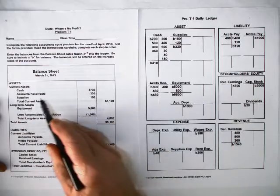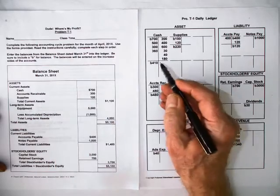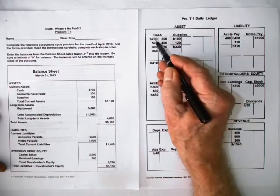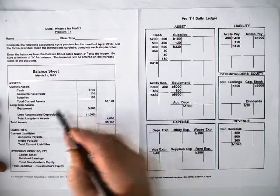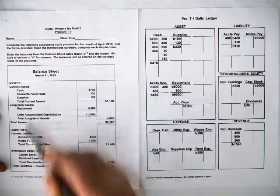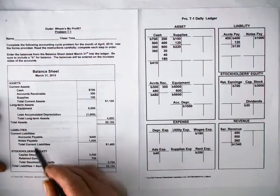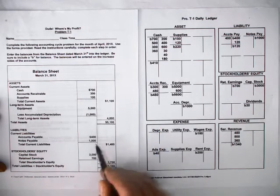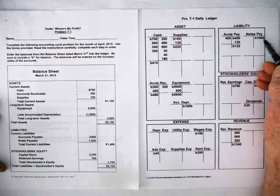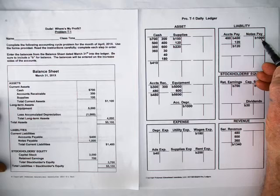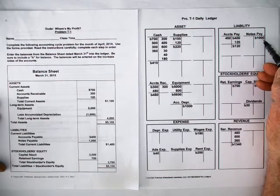For example, $700 in cash right there, accounts receivable $480, notes payable $1,000, and so forth. You can see that the numbers end up on the increased sides of the accounts.